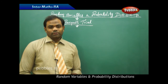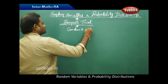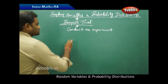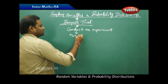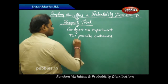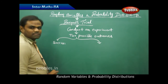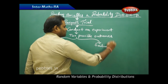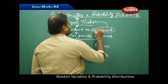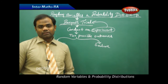Bernoulli trial — let's see what a Bernoulli trial is. If I conduct an experiment and I expect two possible outcomes, one outcome is called success and the other outcome is called failure, then such an experiment is called a Bernoulli trial. So an experiment in which we have two possible outcomes — success and failure — is called a Bernoulli trial.